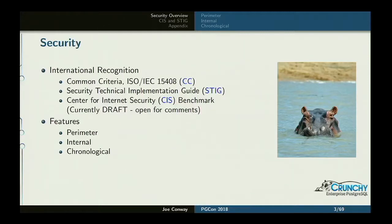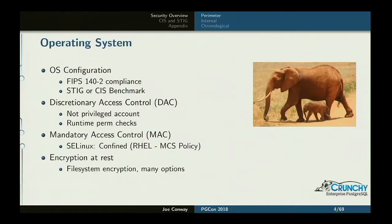In terms of the security features of Postgres, I lump them into three categories: perimeter security, internal security, and chronological security. In terms of perimeter security, the very first thing you've got to do if you want to lock down your database system is care about the operating system the database is running on.